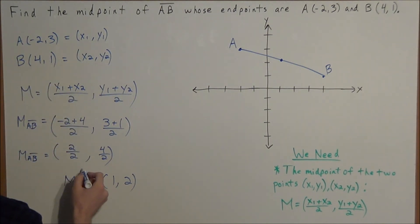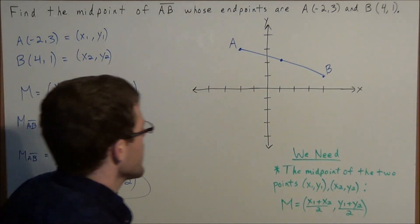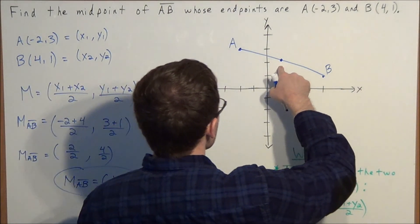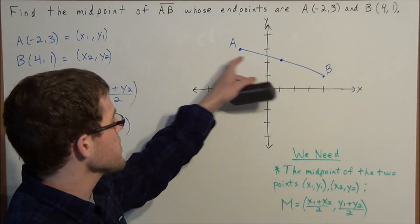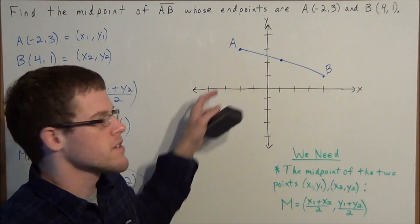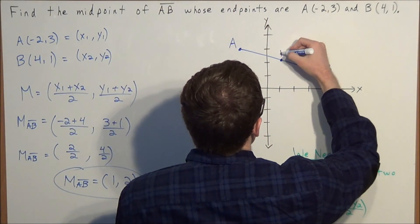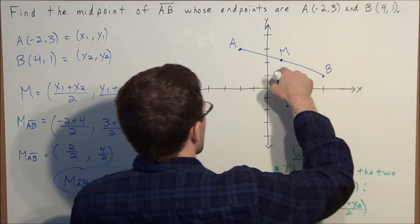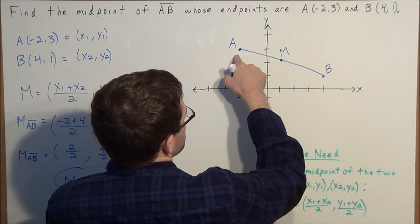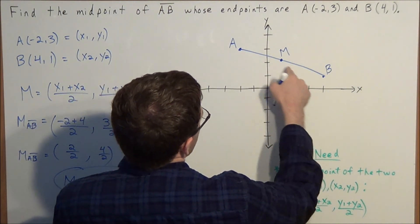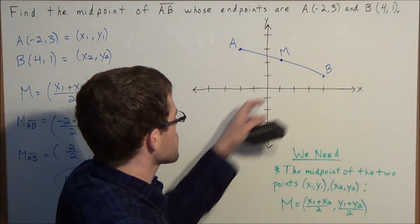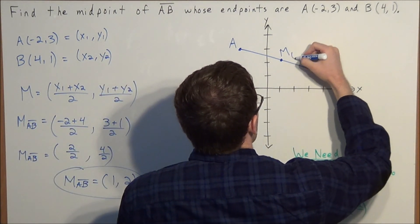So the midpoint will be the point (1, 2). And if we look at the graph, because I freehand sketched this, I'm not going to be able to draw a perfect grid. But we can tell that this midpoint, or the point that separates line segment AB into 2 equal halves, falls around the point (1, 2).